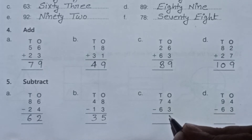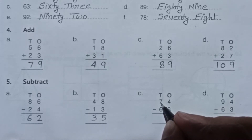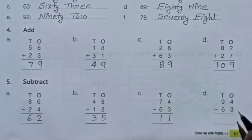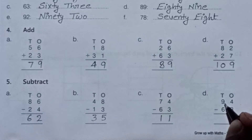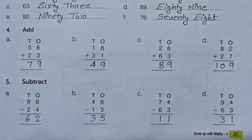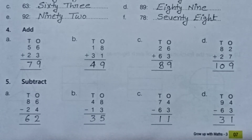4 minus 3 equals 1. 7 minus 6 equals 1. 4 minus 3 equals 1. 9 minus 6 equals 3. Question number 5 is complete. Come to the next question — question number 6.